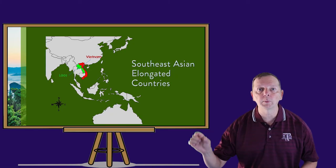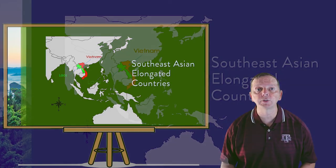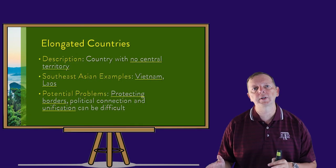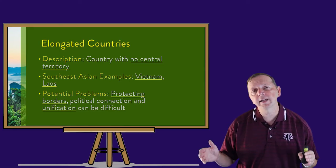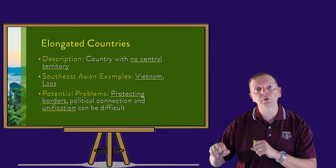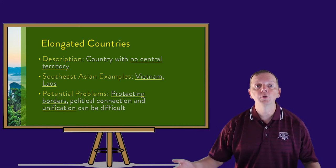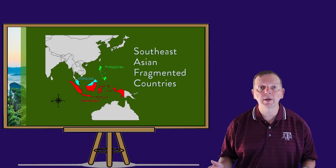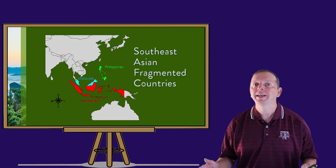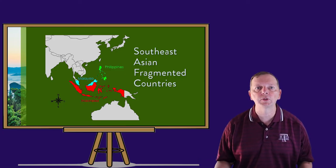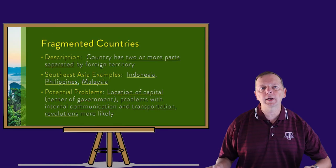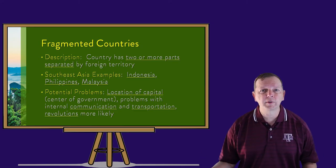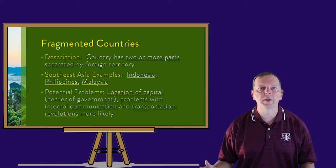And if your country is long with no central territory, like Vietnam or Laos, then it's what we call an elongated country. The entire country can have the same type of difficulties that a prorupted country has in its tail. This has led several elongated countries in history to separate into two different countries, such as North and South Korea, or even what used to be North and South Vietnam. And if you look at Malaysia, the Philippines, or Indonesia, it's easy to see they are great examples of fragmented countries — a country in which at least two parts are actually separated from each other. Government services, communication, and travel are all difficult within a country like this, and it makes it hard for a government to control everywhere in its territory.